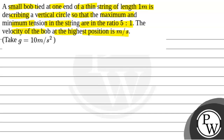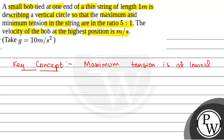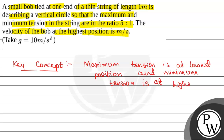Take g equal to 10 meter per second square. We will solve this question. The key concept to solve this question is: maximum tension is at the lowest position and minimum tension is at the highest position. So in case of vertical circular motion, maximum tension is at the lowest position and minimum tension is at the highest position.